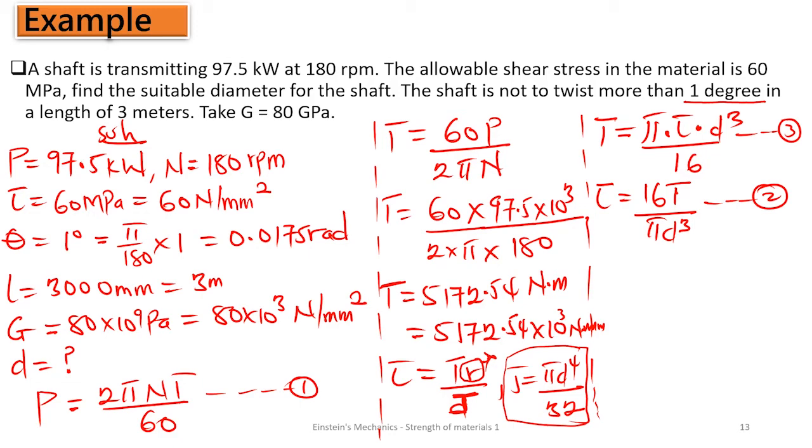From here we are interested in finding the diameter of the shaft. We can make d³ the subject, so d³ equals 16T divided by π times shear.